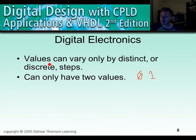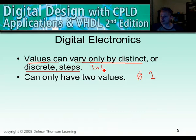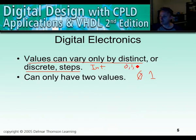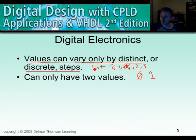So in digital electronics, as we've alluded to, values can vary only by distinct or discrete steps — in other words, integers. Integers are counting numbers that allow negative numbers and zero. The counting numbers are 1, 2, 3. If you add zero and then add negative numbers, those are integers. So that's really what discrete steps means: the values are integers.